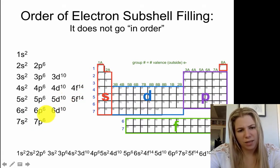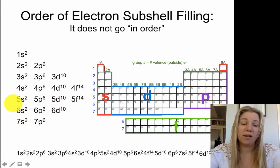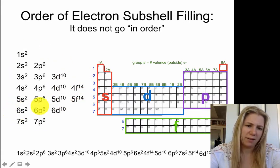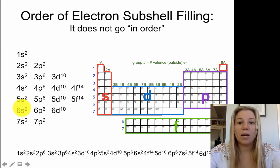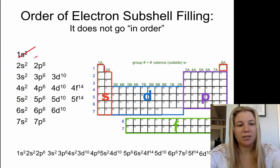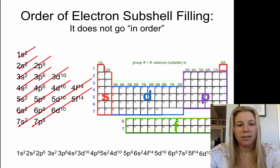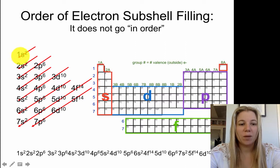Now you won't actually need to go this far. In fact, you'll probably only have to go around this area here. But the way that they actually fill out is diagonal. So if we write diagonal lines through here, like this, this actually gives us the order. So our first one here, 1s2.